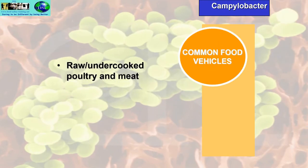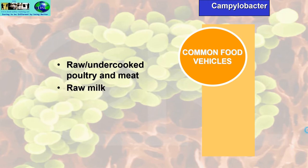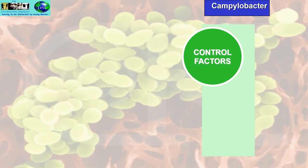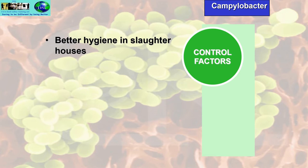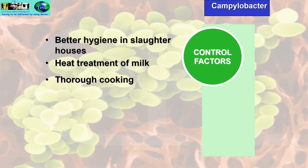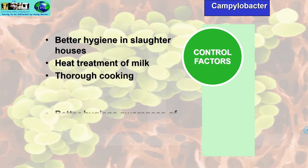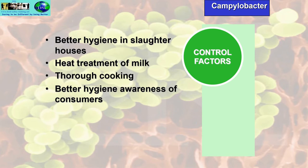Common food vehicles include raw or undercooked poultry and meat, raw milk, and contaminated water. Control factors include better hygiene in slaughterhouses, heat treatment of milk, thorough cooking, and better hygiene awareness among consumers.